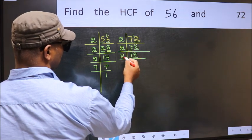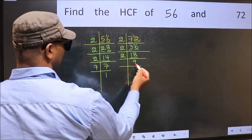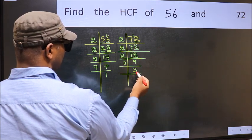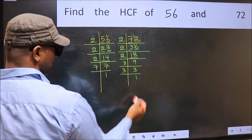Now 18 is 2×9=18. 9 is 3×3=9. 3 is a prime number, so 3×1=3.